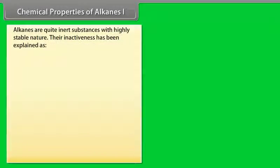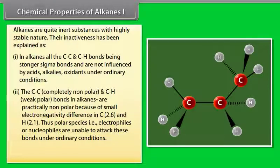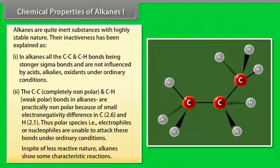Chemical properties of alkanes part 1: Alkanes are quite inert substances with highly stable nature. Their inactiveness has been explained as: 1. In alkanes, all the carbon-carbon and carbon-hydrogen bonds being stronger sigma bonds are not influenced by acids, alkalis, or oxidants under ordinary conditions. 2. The carbon-carbon bonds are completely non-polar and carbon-hydrogen bonds are weakly polar in alkanes, particularly non-polar because of small electronegativity difference in C (2.6) and H (2.1). Thus, polar species, i.e. electrophiles and nucleophiles, are unable to attack these bonds under ordinary conditions. In spite of less reactive nature, alkanes show some characteristic reactions.